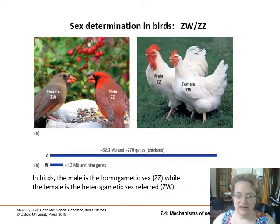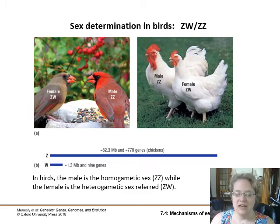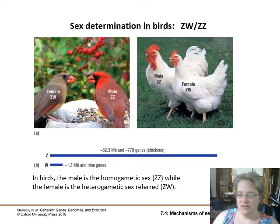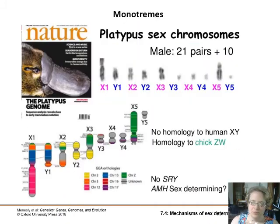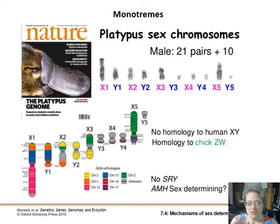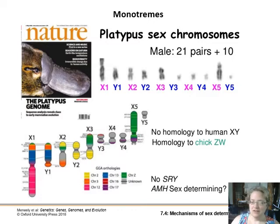In birds, the arrangement of chromosomes and sex determination is flipped. Males are the homogametic sex with two of the same sex chromosome, while females are the heterogametic sex with one of each — so instead of the XY system, this is the ZZ/ZW system. Monotremes — platypus and echidna — actually have five pairs of sex chromosomes, so ten extra chromosomes, which don't seem to have much homology to the mammalian XY system but do show some homology to the bird ZW system. There is no SRY analog in monotremes whatsoever; they have their own AMH region instead.